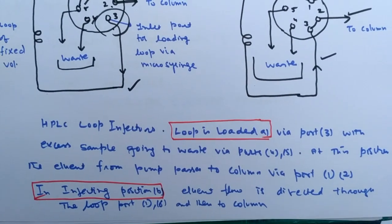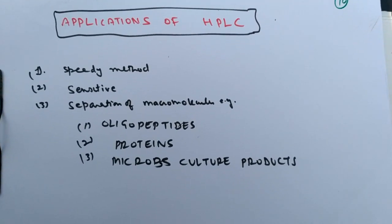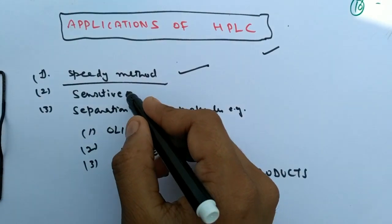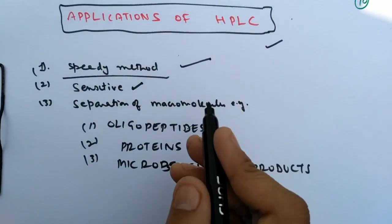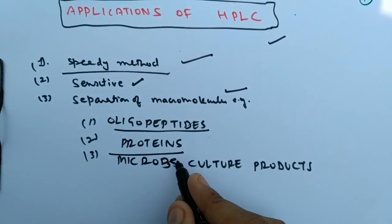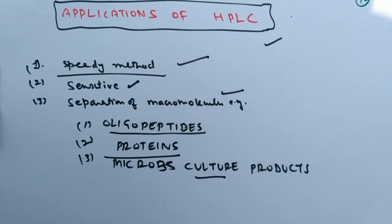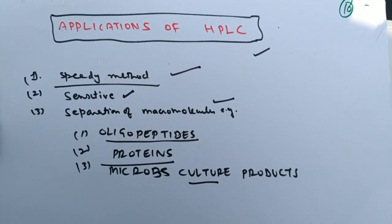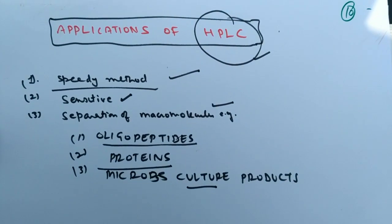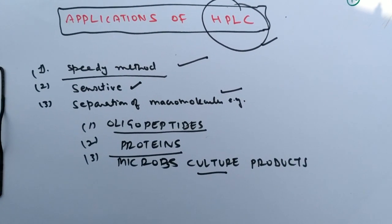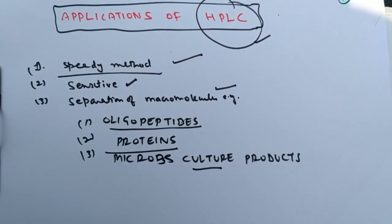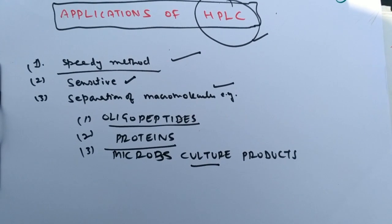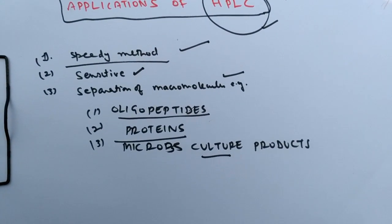The applications of HPLC: it is a validated, vastly recommended and sensitive technique. Separation of macromolecules occurs — oligopeptides, proteins — in microbial culture products. Various components such as vitamins, proteins, lipids, enzymes, and hormones are cultured and then collected and separated with the help of HPLC. If you have any questions related to this discussion, you can comment in the comment box. Please like, subscribe, and share this video among science students.